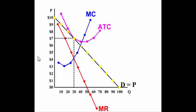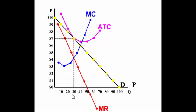To confirm: total revenue P times Q is 210. The average total cost is 7, and 7 times 30 is 210 — that's the total cost. So the economic profit is equal to zero.